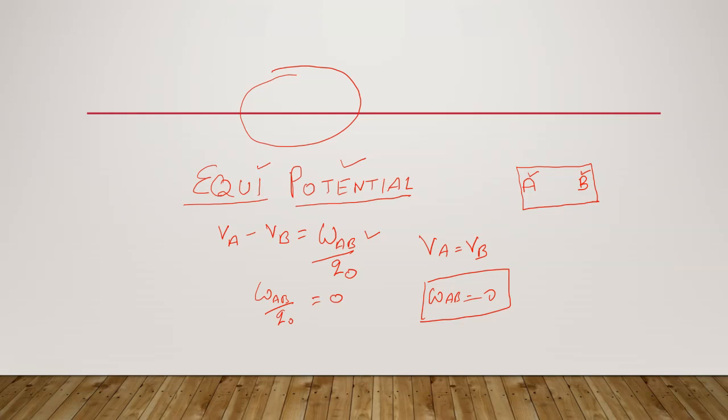And two equipotential surfaces cannot intersect each other. Otherwise there would have been two directions of electric field at the point of intersection, which is impossible. That I have also discussed in the properties of the electric lines of force.